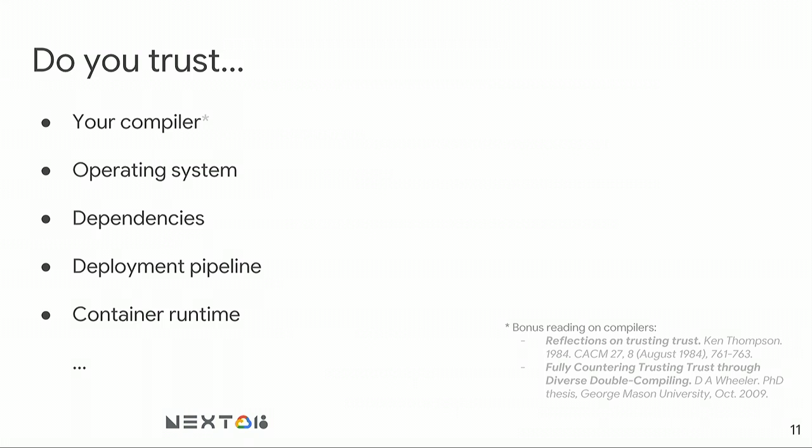Does anyone here completely trust all the things in their deployment pipelines? A lot of things you use to deploy, run, or build your software mostly come from people you don't exactly know. There are scientific papers about trusting compilers. Verifiable operating systems is a space of its own, and you probably use open source dependencies with Jenkins or some other deployment pipeline.